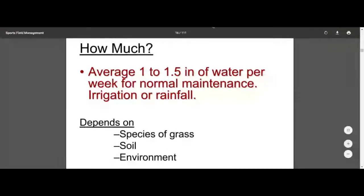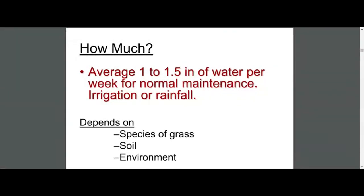The main thing here: can everybody see the 1 to 1.5 inches of water per week for normal maintenance? That's really important for your project — that's the only number you really need. We're doing a budget, so if it rains we're not going to irrigate, but we're going to budget for water as if all the water has to come from irrigation. You know the area of your field, so you can figure out how many gallons it is to water, and that should be in your spreadsheet adding up.